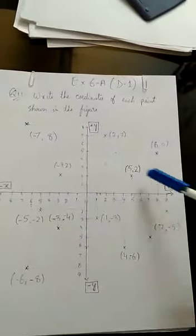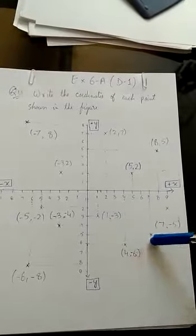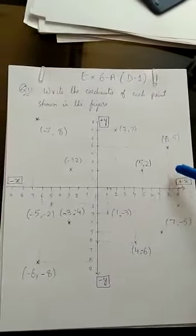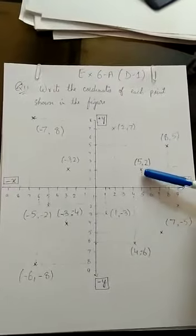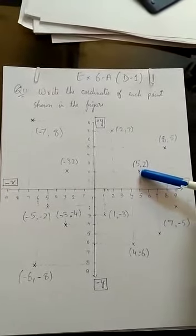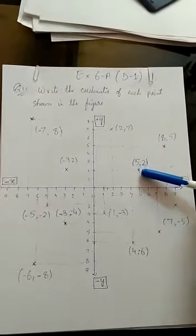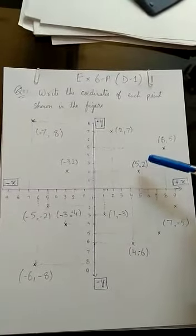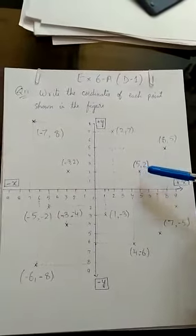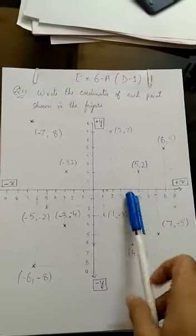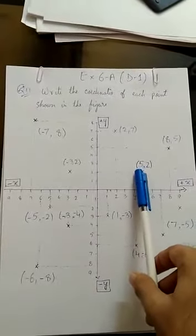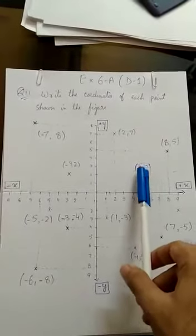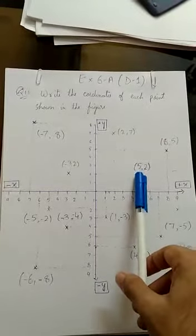Here we have the first question in which a graph was plotted and these points were given to us, and we had to find the coordinates of the given points. For example, if a random point is given on the graph, we have to find what the value of X and the value of Y are at that particular instance. We always write the value of X first, and the next number is always for Y — so (5, 2) means 5 is the value of X and 2 is the value of Y.